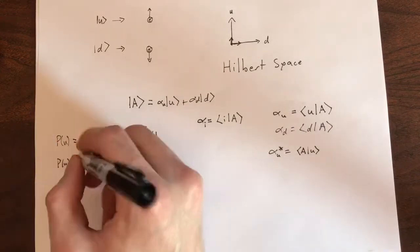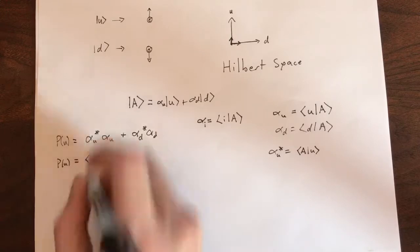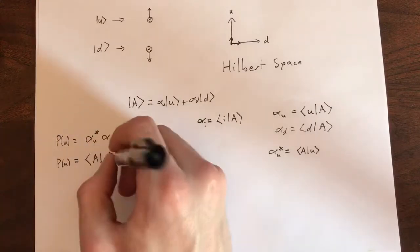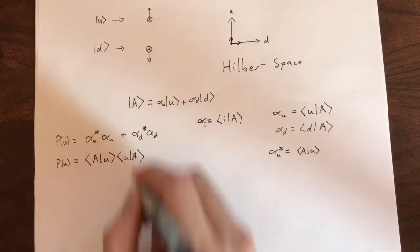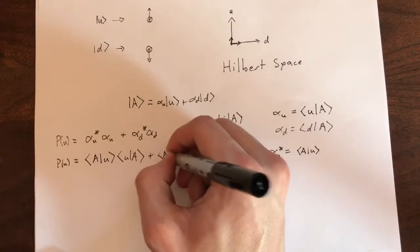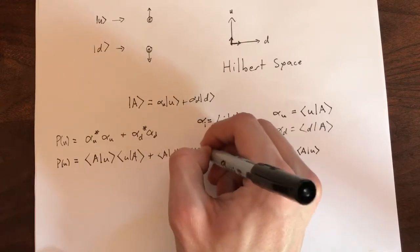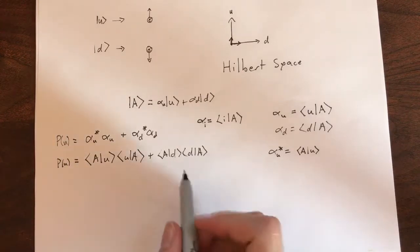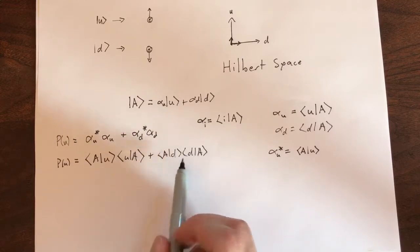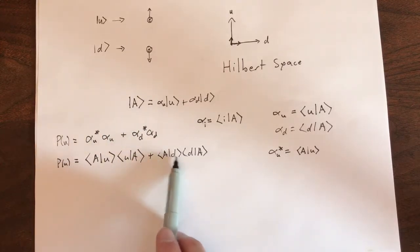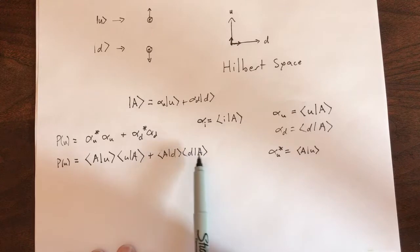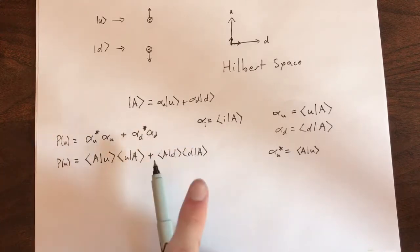So, we can represent the probability as: firstly, the complex conjugate right there, bra A, ket u, ket u. And then the regular component, bra u, ket A, plus the same for this. Now, one note. Since inner products spit out scalars as their answer, we can switch these two inner products. So I could write this as dA and then AD. And it wouldn't change. The order within an inner product matters. But the order in which you multiply these two inner products doesn't matter.